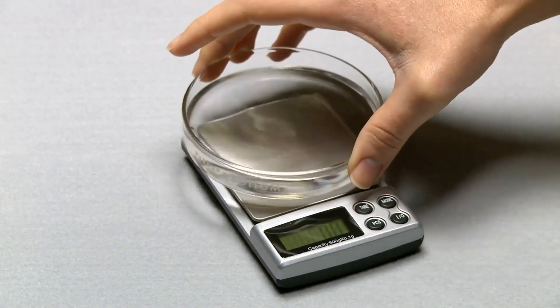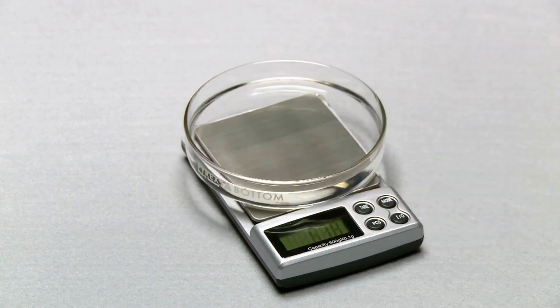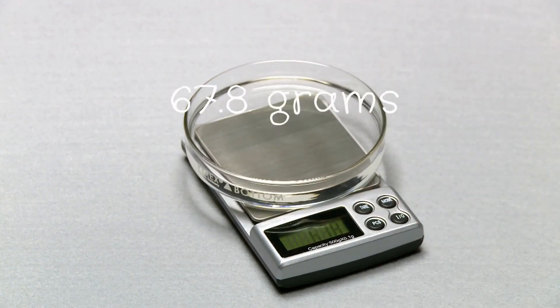First, we add ethanol to the petri dish and put it on the digital scale. We're starting with 67.8 grams of ethanol.